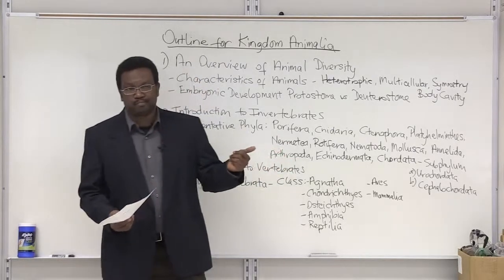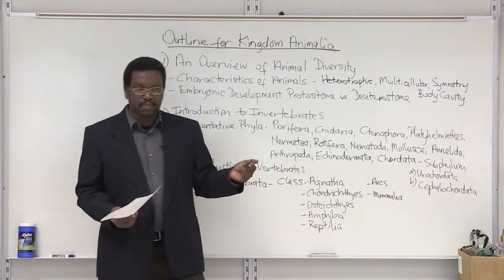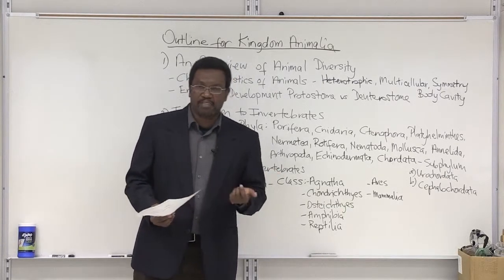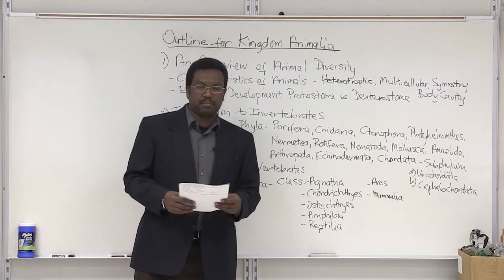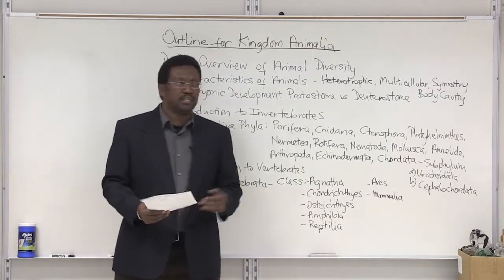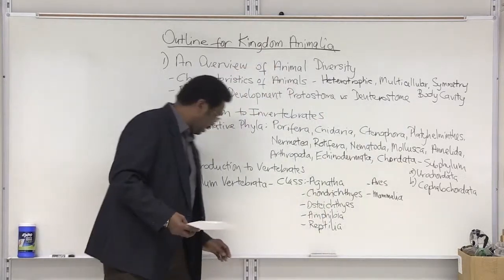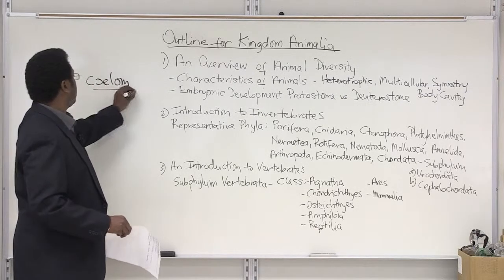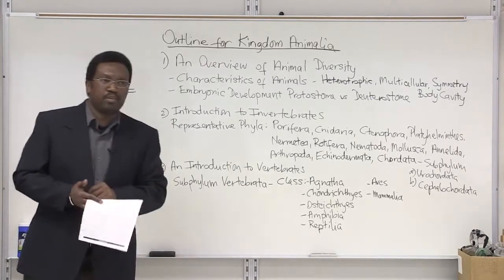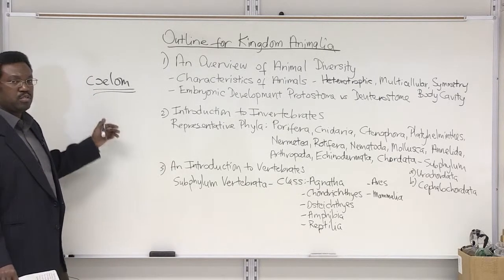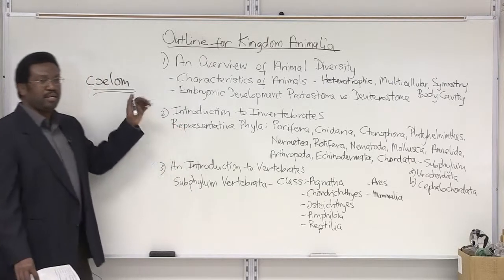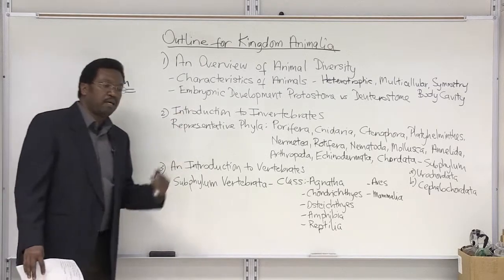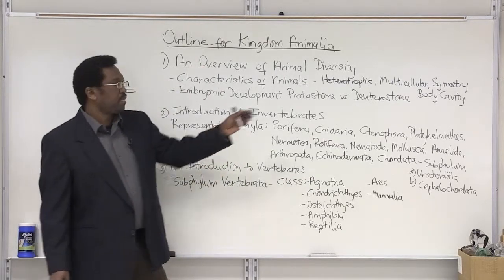So we have heterotrophic, multicellular, and germ layers. Another key characteristic of animals is body cavity. The more advanced animals, based on their embryonic germ layers, have a body cavity referred to as a coelom. Not every animal has a complete body cavity. Going through the list, we have those lacking a coelom — acoelomates — those with a false body cavity — pseudocoelomates — and then the more advanced animals with a complete body cavity — coelomates.